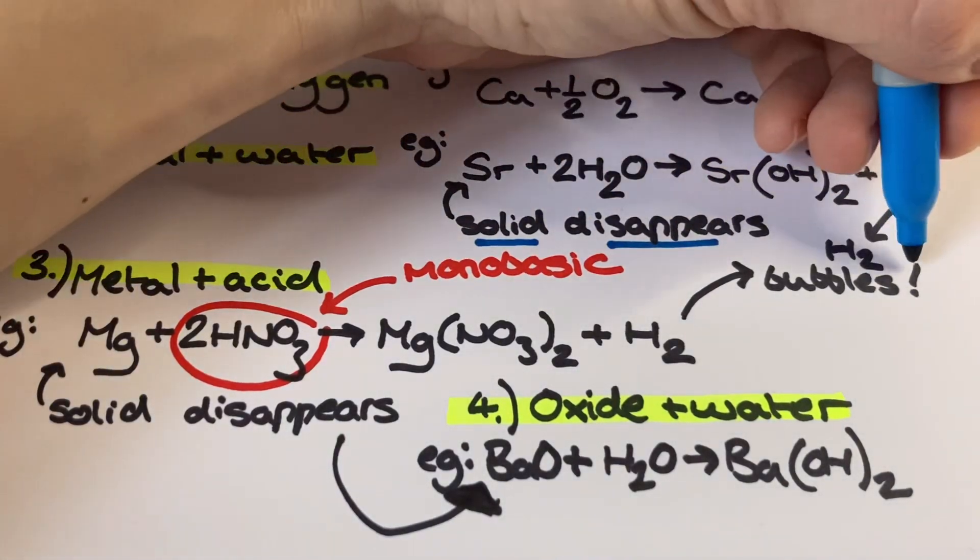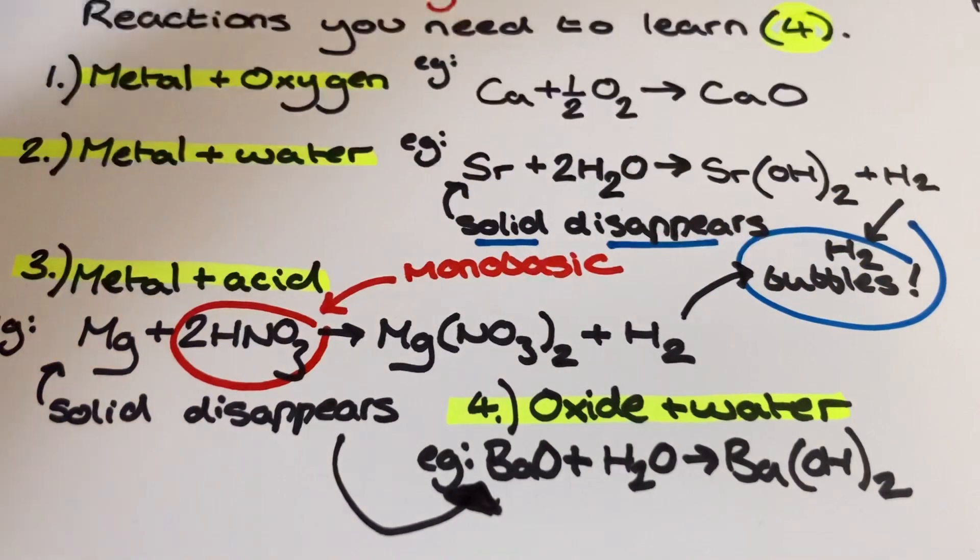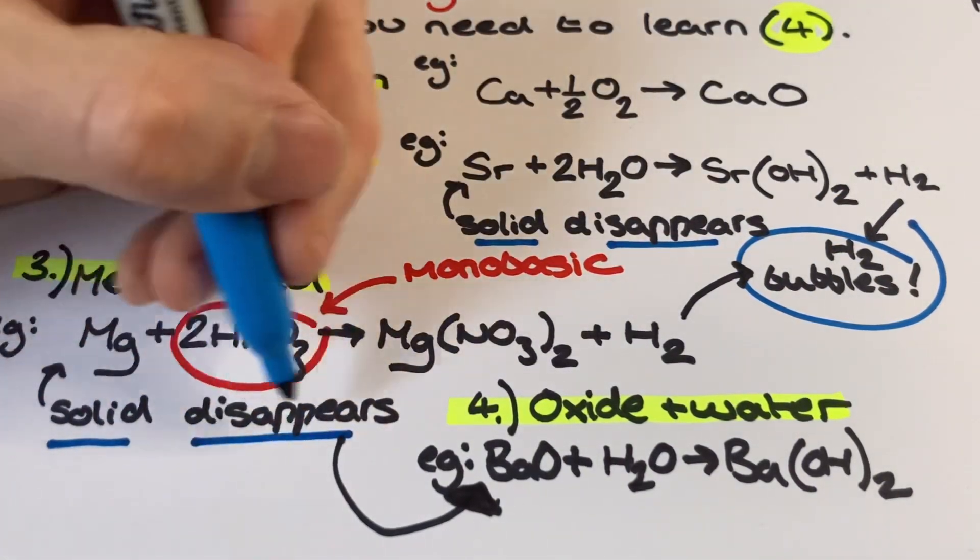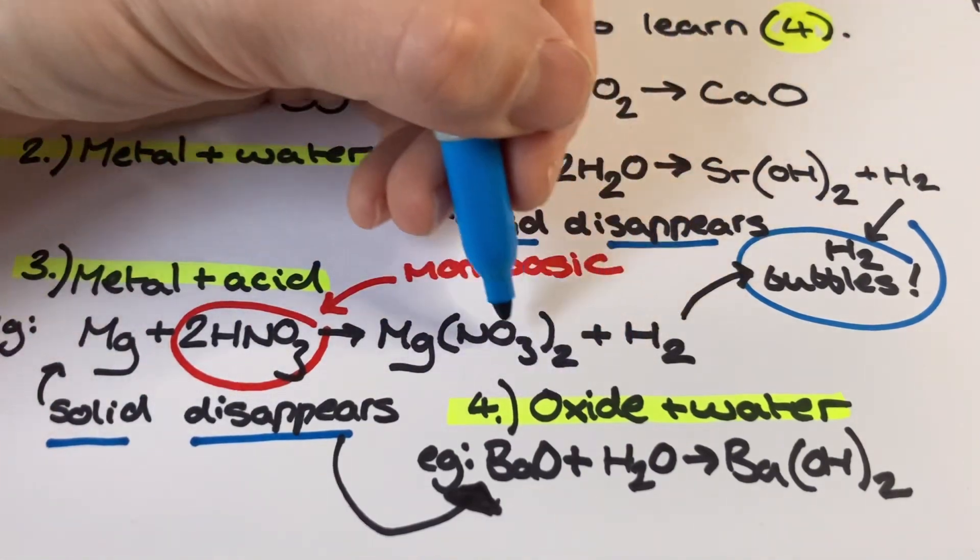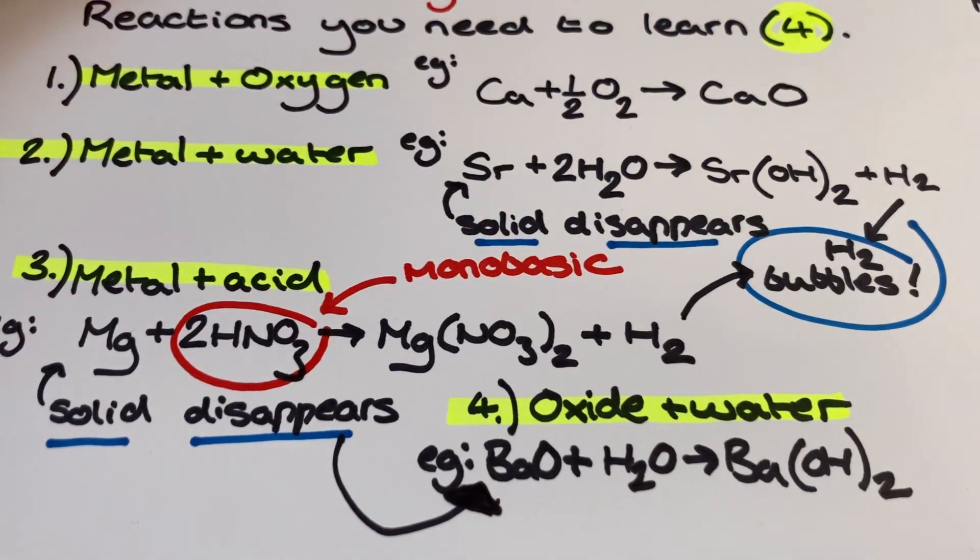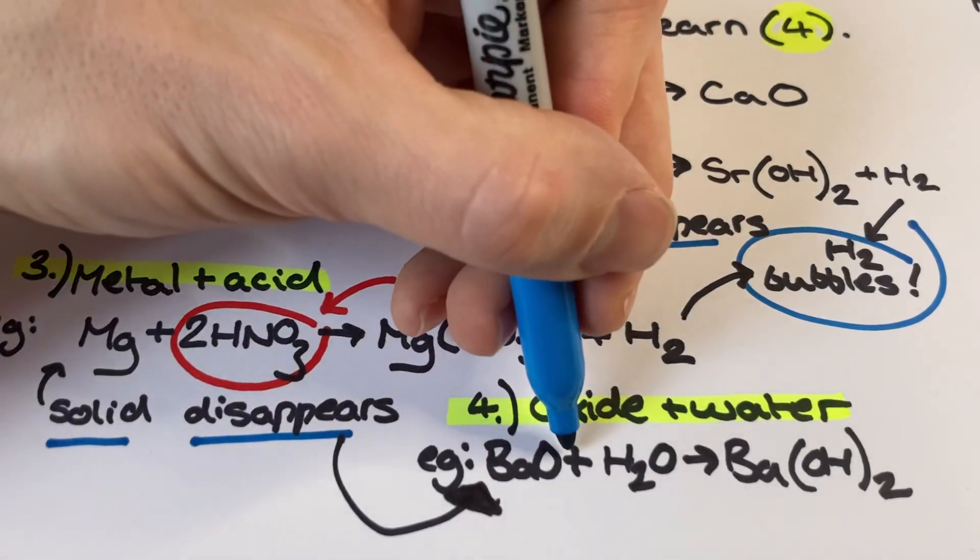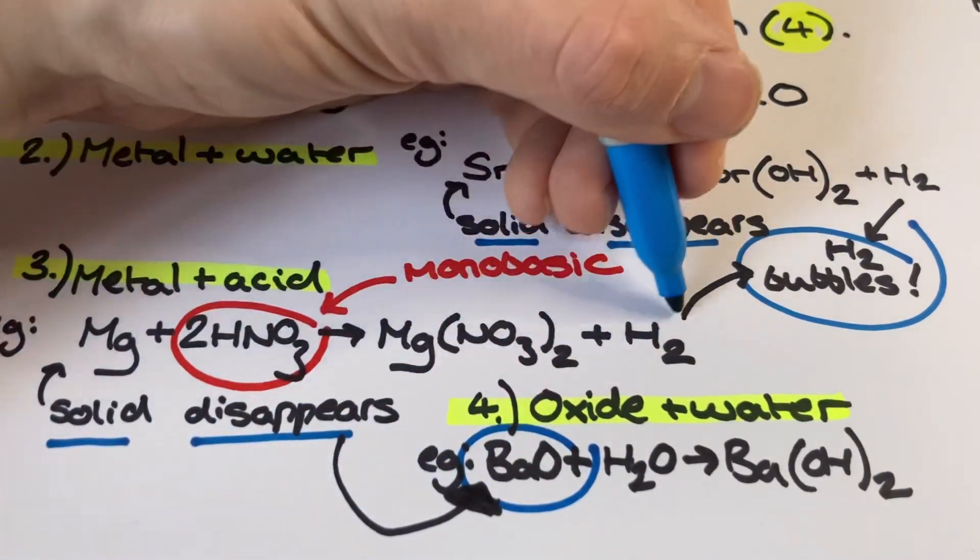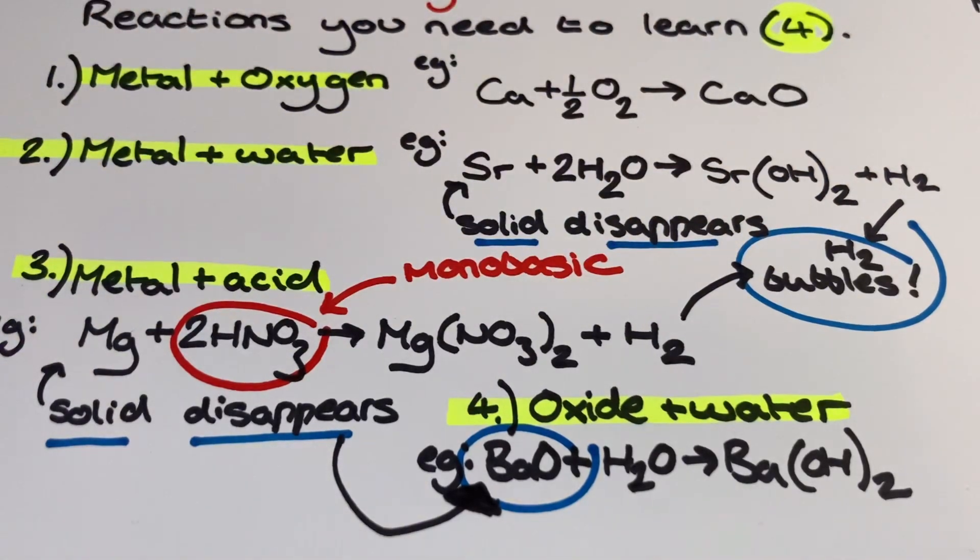Just a couple reminders of some other points. You do need to be aware of your observations, such as solid disappearing in reactions 2, 3 and 4, and bubbles being produced in reactions 2 and 3. In reaction 3, if I was to use a dibasic acid like H2SO4, the balancing would be a little different as I wouldn't need two moles of the acid in that instance.